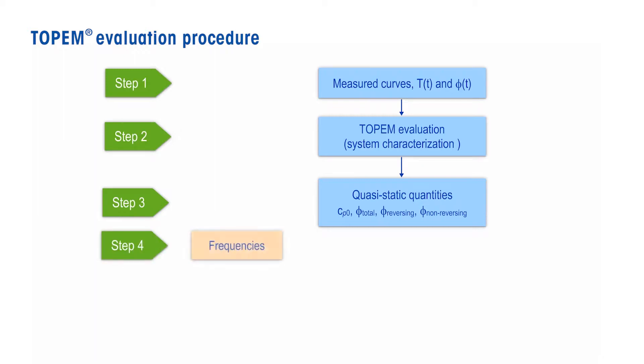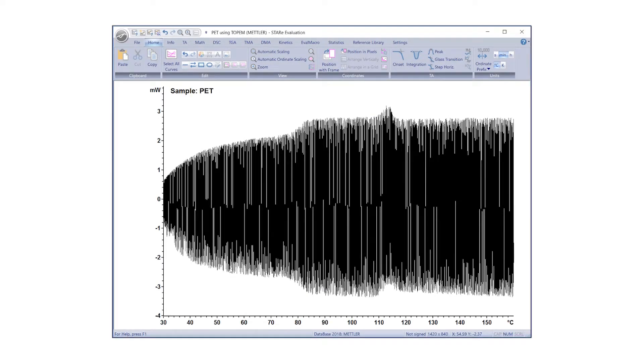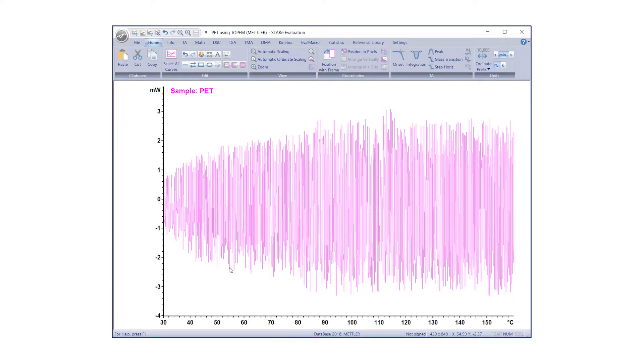Step 4: Calculate the frequency-dependent curve and the complex-specific heat capacity for any particular frequency. Start by opening a Topham measured curve and select it by clicking on the curve.